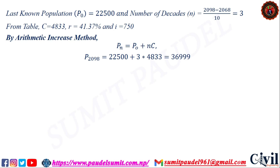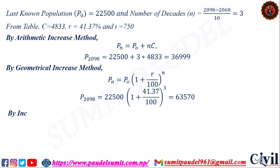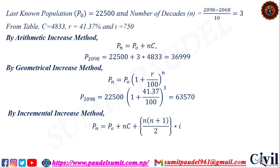By Geometrical Increase Method: Pn = P0 × (1 + r/100)^n. For P 2098, substituting the values, r is found and the result is 63,570.